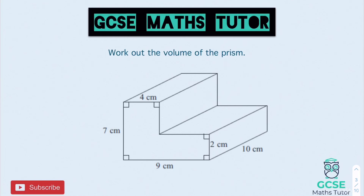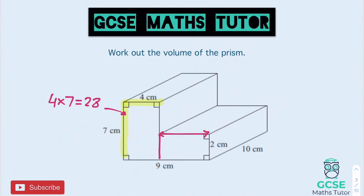For the L-shape, it doesn't matter which way you split it — I'm going to split it vertically again. For the rectangle on the left, we do 4 times 7 which is 28. Along the bottom we have a length of 9, and the top portion is 4, so the missing length for the right rectangle is 5 — since 4 and 5 make 9. The rectangle on the right is then 2 times 5, giving an area of 10.